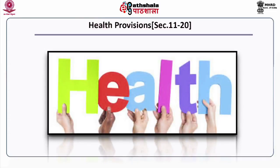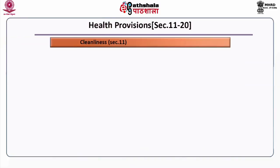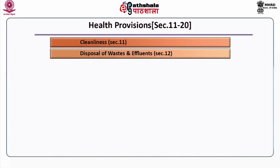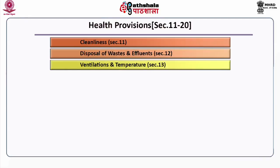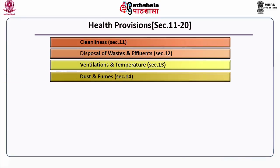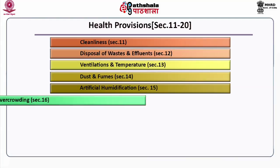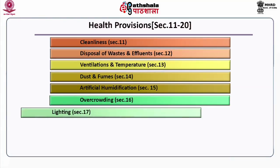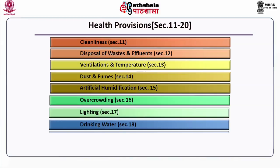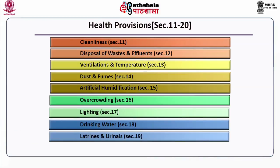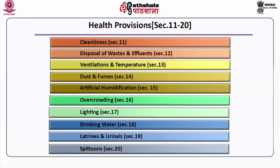Chapter 3 discusses the various provisions relating to health, ranging from Section 11 to Section 20. Under Section 11 — cleanliness; Section 12 — disposal of wastes and effluence; Section 13 — ventilation and temperature; Section 14 — dust and fumes; Section 15 — artificial humidification; Section 16 — overcrowding; Section 17 — lighting; Section 18 — drinking water; Section 19 — latrines and urinals; and Section 20 — spittoons.